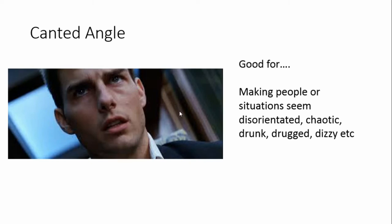A canted angle is where you tilt your camera so it's not level — people end up looking slightly wonky. As you can see here with Tom Cruise, his head is at an angle rather than straight up. Look at background elements like door frames or the horizon to identify it. These are sometimes called Dutch tilts, and they make situations or people seem chaotic, disorientated, or can suggest someone is drunk, drugged, or dizzy.